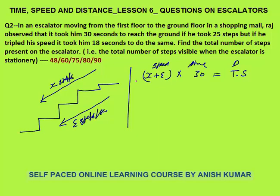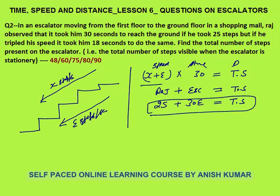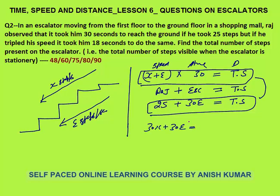Also given that Raj took 25 steps in 30 seconds. So Raj's steps plus escalator steps equals total steps: 25 plus 30e equals total steps. This is the second equation. Setting both equations equal: 30x plus 30e equals 25 plus 30e. The 30e cancels out, giving 30x equals 25, so x equals 5 by 6.